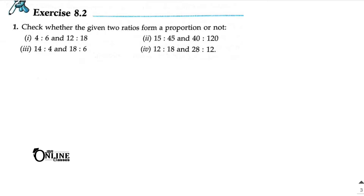Here in Exercise 8.2, the first problem says: check whether the given two ratios form a proportion or not. If these two ratios are in proportion, the ratios will be equal. The first one is 4 is to 6, the second one is 12 is to 18. If you divide 4 and 6 by 2, it becomes 2 is to 3, and if you divide 12 and 18 by 6, it is also 2 is to 3. So this one is in proportion.